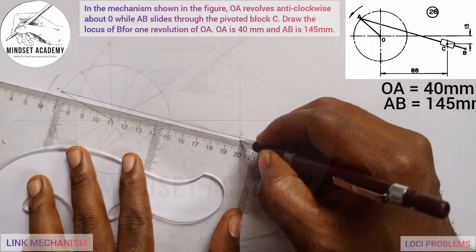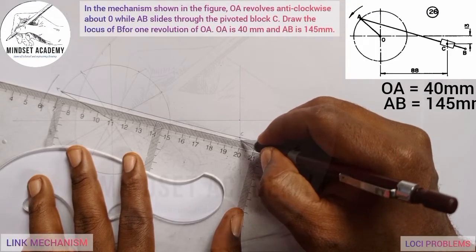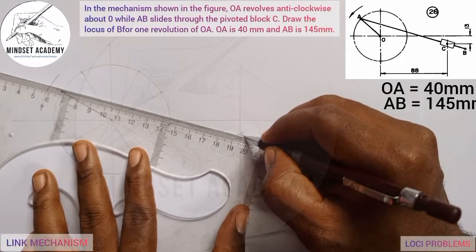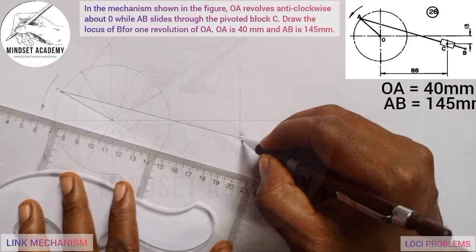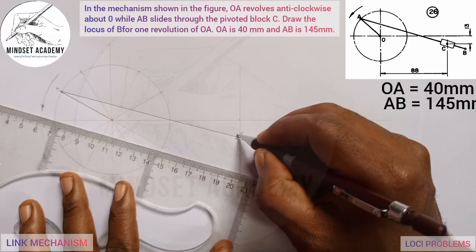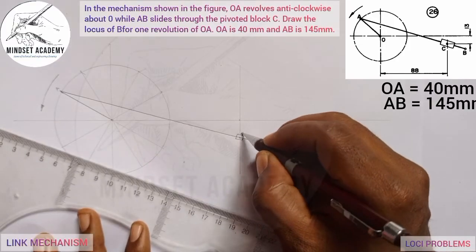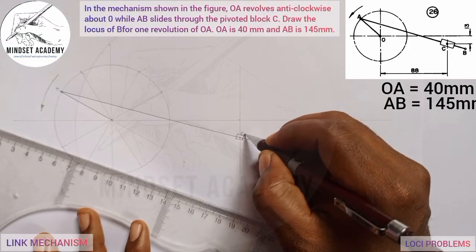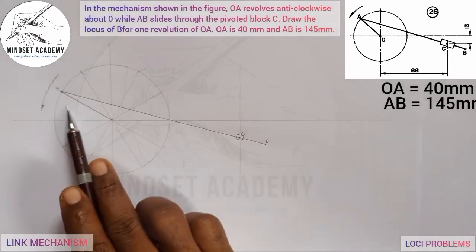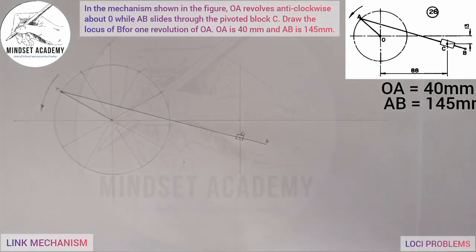Draw a parallel line at any given region of your choice passing through point C. You can see it is passing through that point C. That completes the initial setup — this is A, this is B, and this is C as shown in the diagram.